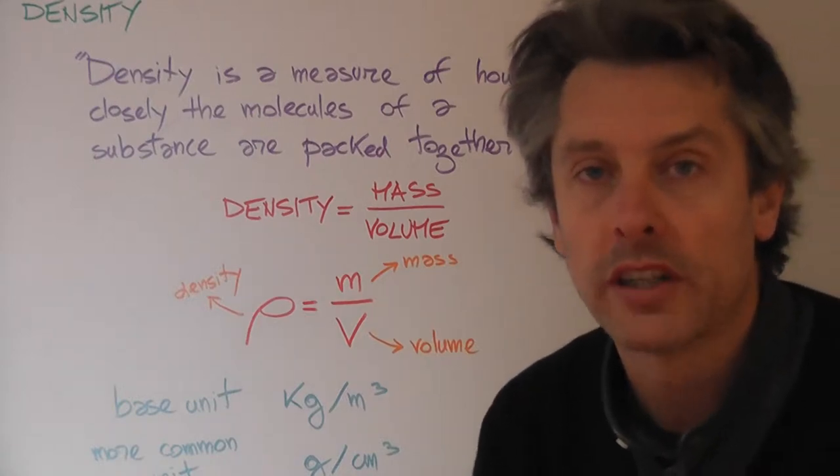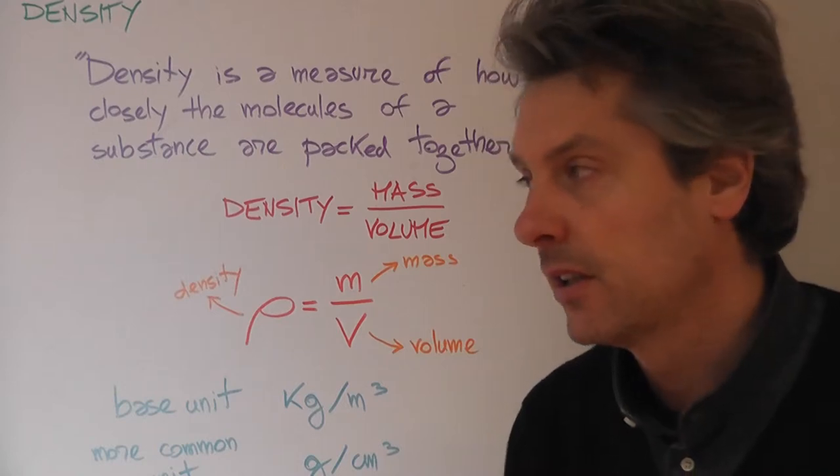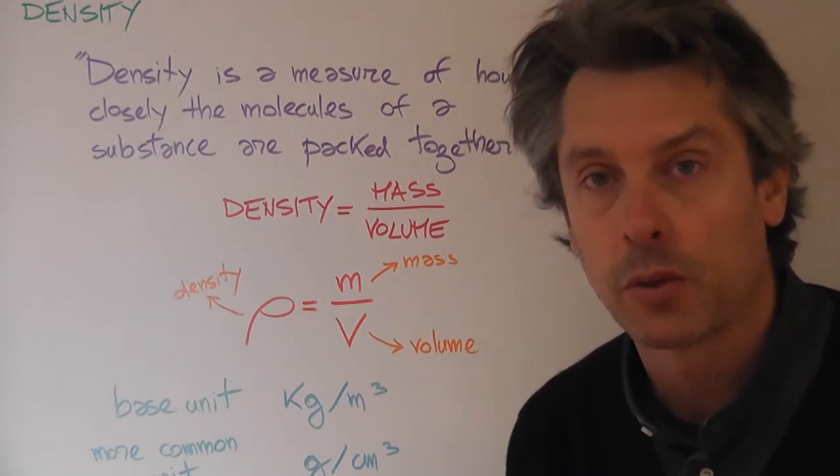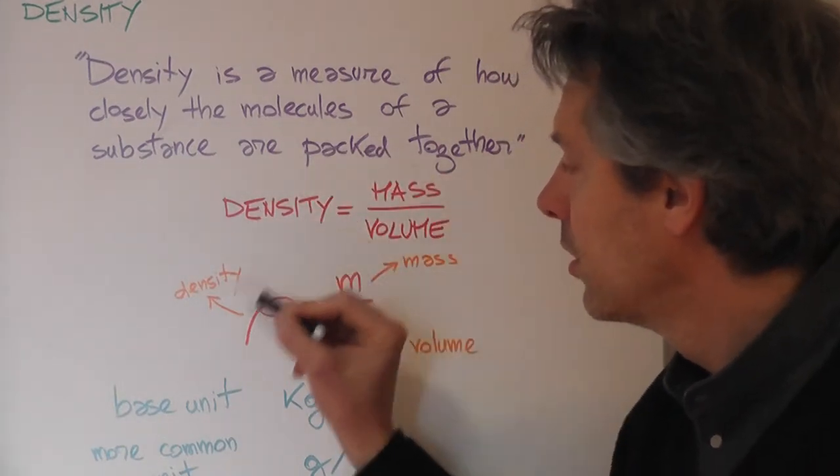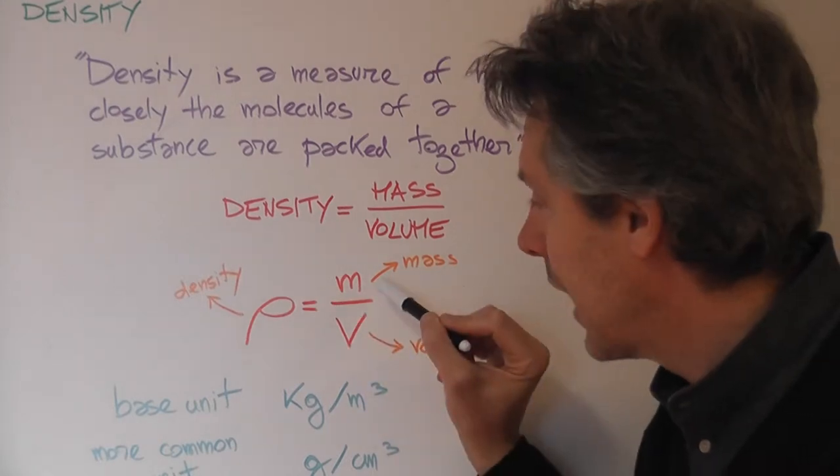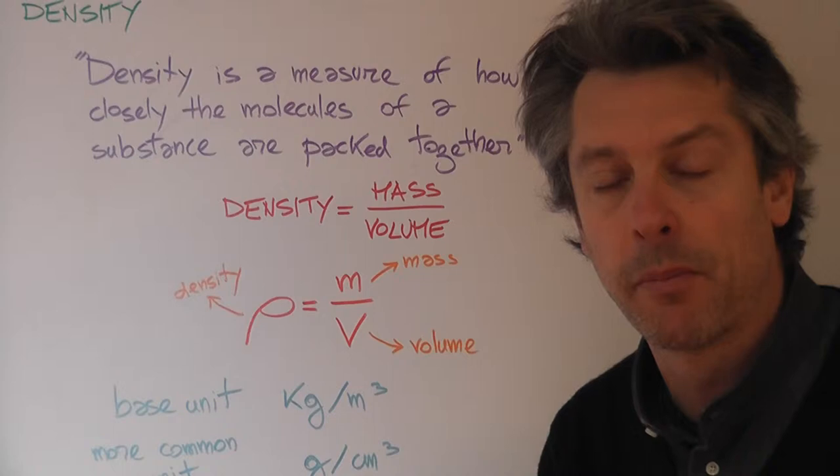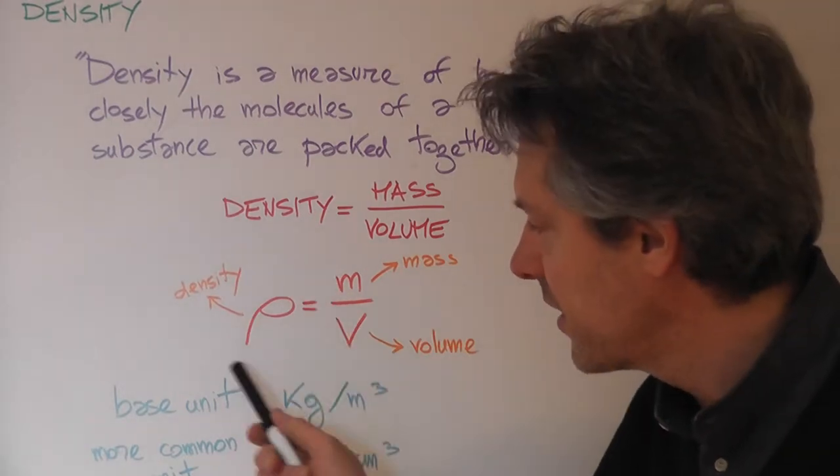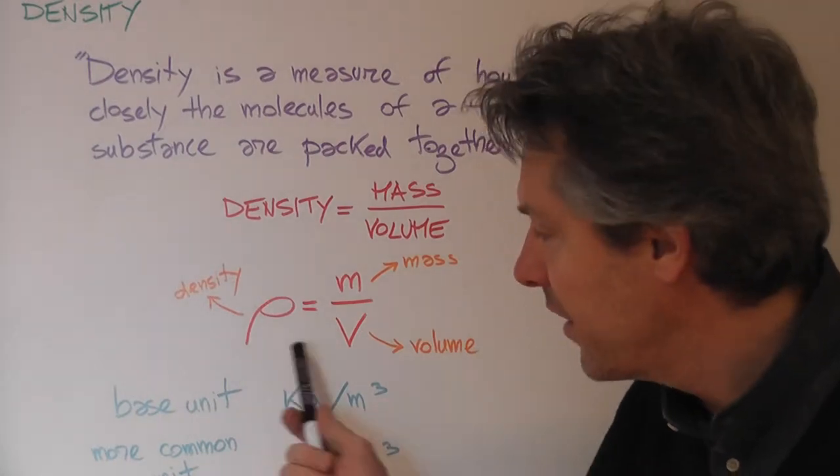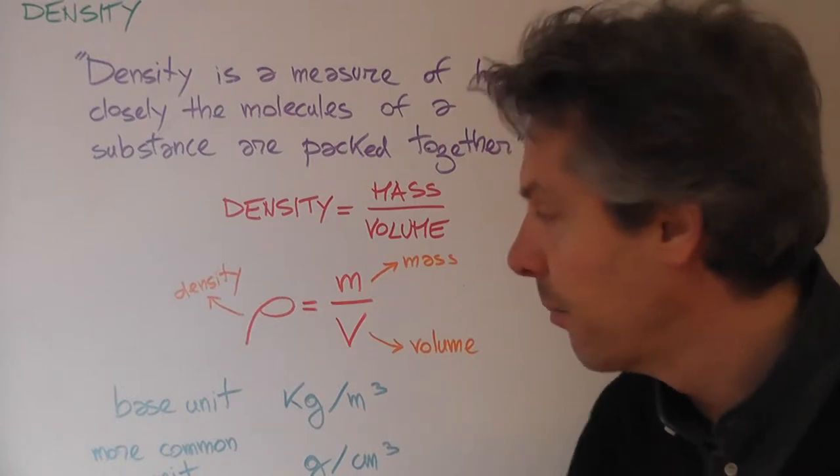This is what we call a word equation. You probably met one of those in chemistry. A chemist, as well as a physicist, prefers not to use word equations, but symbol equations. This is exactly what we're going to do today, moving from using words to using symbols. This is the equation we're going to use when dealing with density. Small m is the symbol for mass, and big V is the symbol for volume. What's a bit strange is this symbol here that looks like a P, but it's actually a Greek letter, the Greek letter Rho, equivalent to our R. This is widely used in physics textbooks, like the one you have, and in college textbooks as the symbol for density.